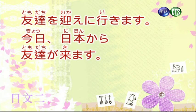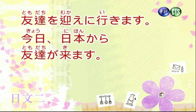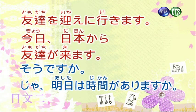今日日本から友達が来ます（今天我的朋友從日本來了）。日本から，このからは起點用法，從日本，我的朋友來了。そうですか，這個口氣要往下掉，表示原來如此、我知道了。じゃあ明日は時間がありますか（那明天有沒有時間）。